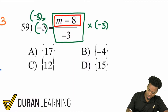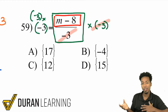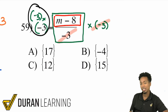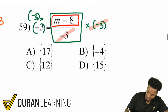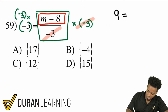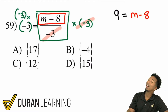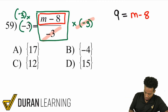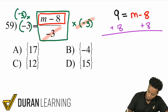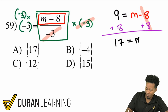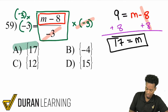Now, multiplying by negative 3 cancels out the division by negative 3. On the right side, negative 3 times negative 3: three times three is nine, and a negative multiplied by a negative is a positive, so we have positive 9 equals m minus 8. Our next step is to get rid of the minus 8 by adding 8 to both sides. That cancels out, and 9 plus 8 is 17. So 17 equals M, and the answer is A.